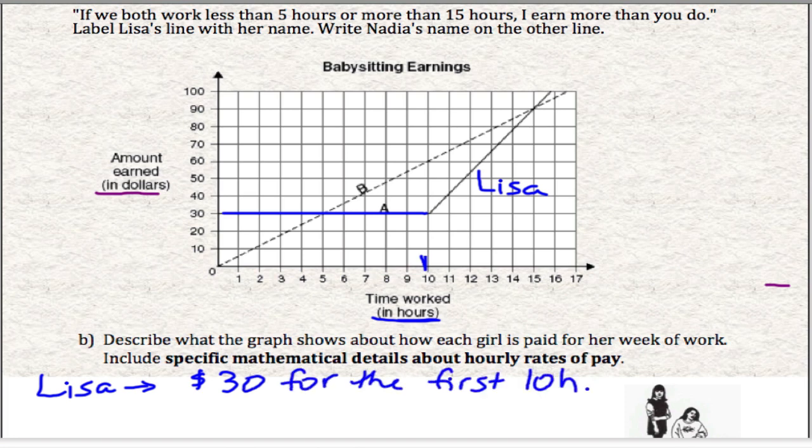After that, we actually have to look at her line and try and figure out how much she's paid per hour. Because then there is some slope. There's a slope to this line after that, which suggests that she's making a certain amount per hour.